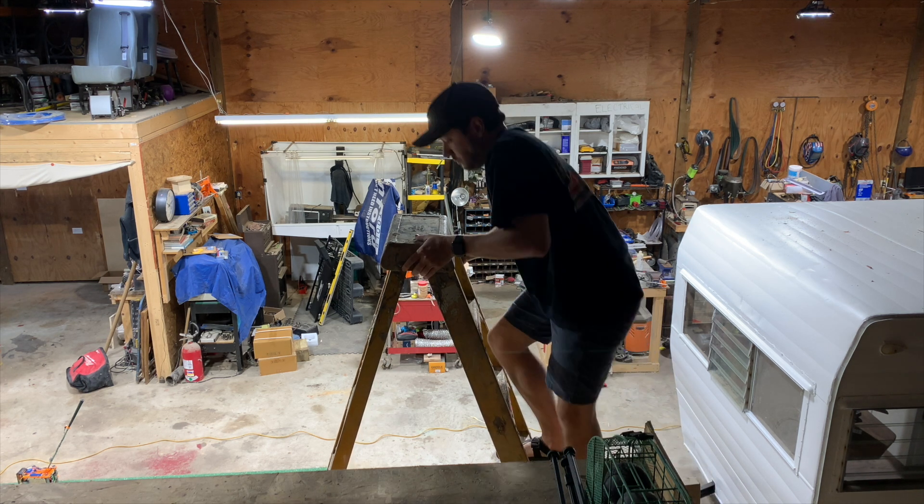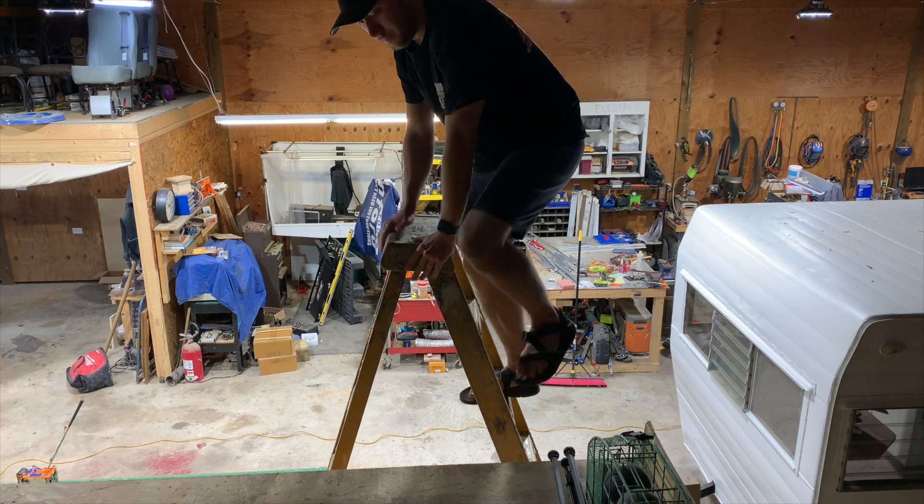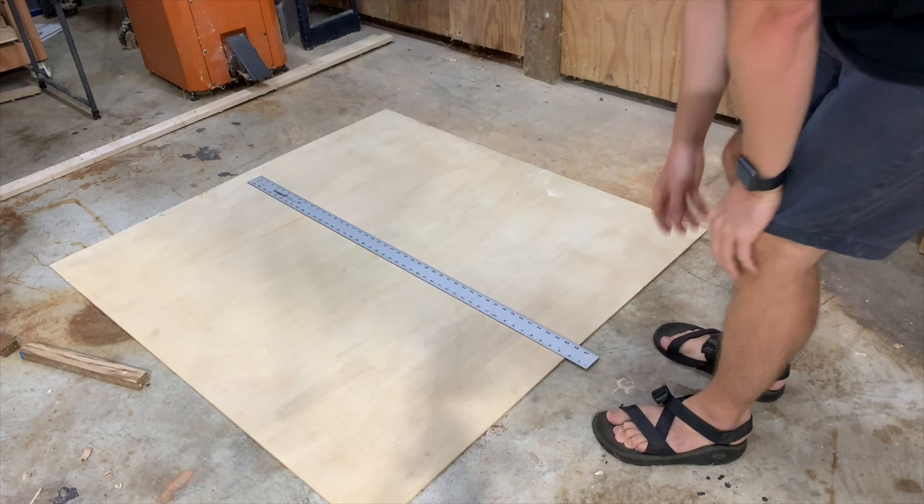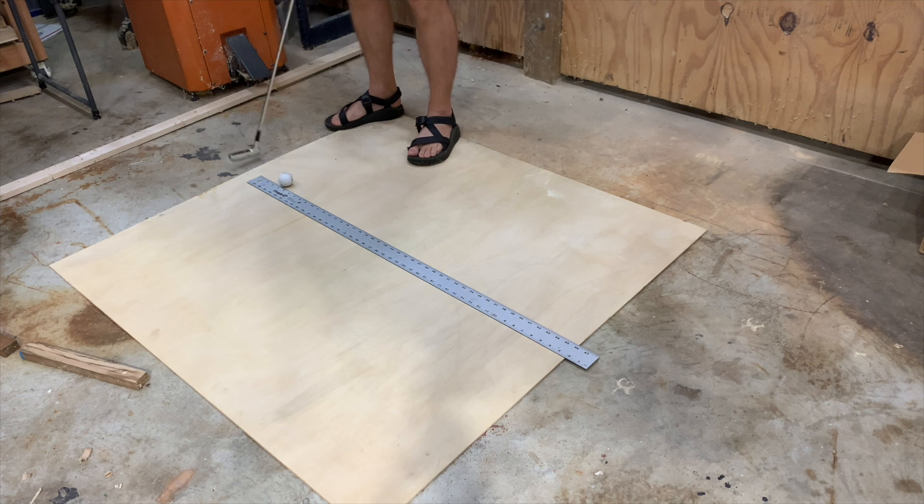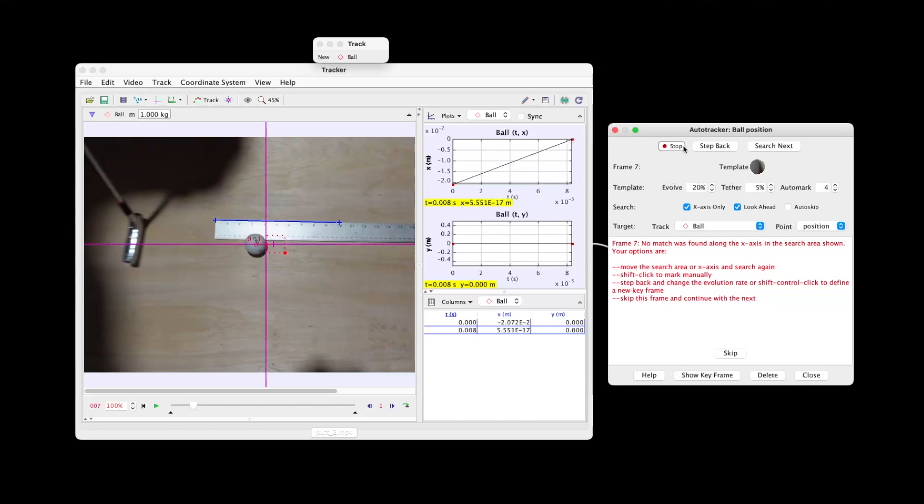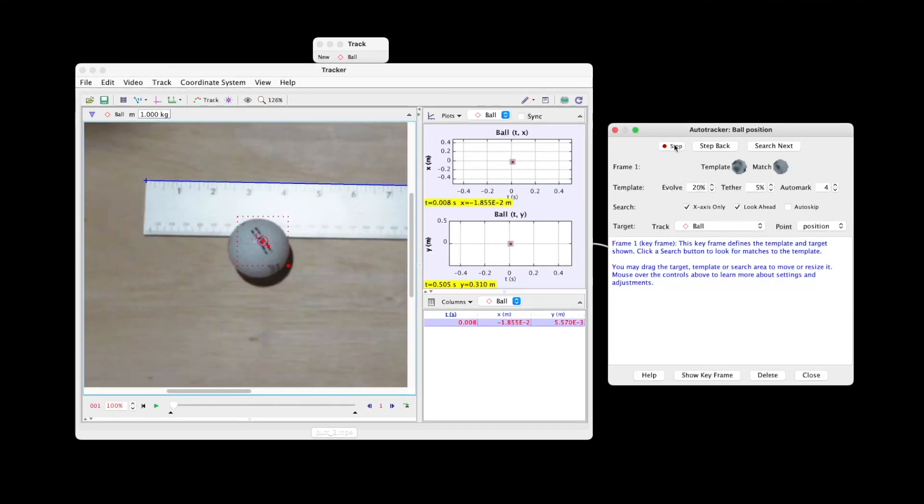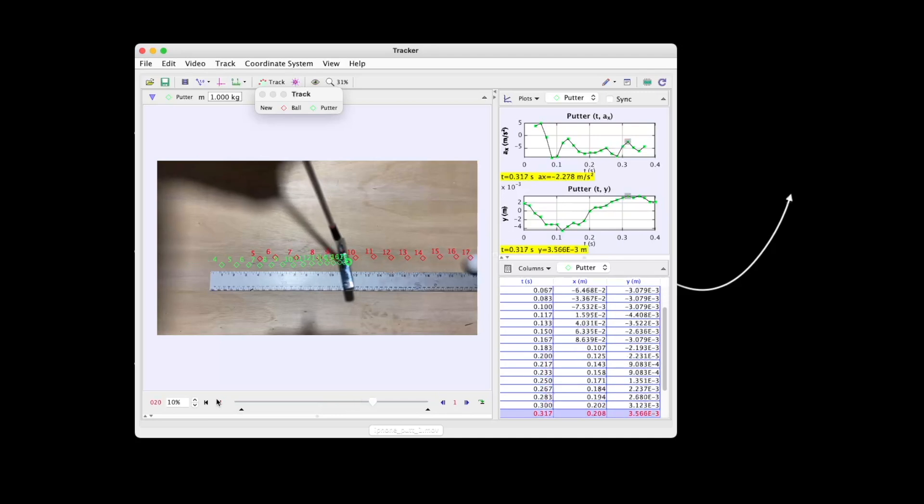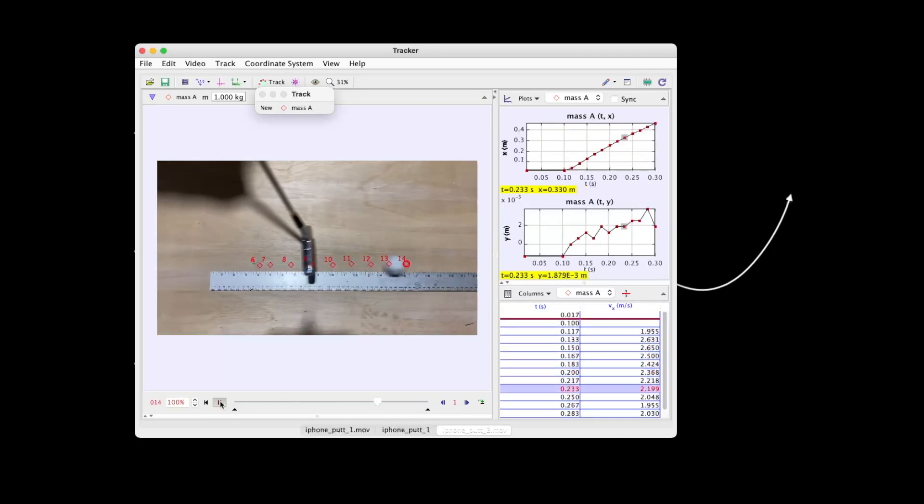The first thing we need to know is how hard to hit the ball. So I went up in the attic and I grabbed an old putter, laid down a ruler, and started hitting some balls. By recording hitting those balls, we can analyze the footage and determine how fast the ball was actually going. This will give me a good starting point on how high to lift the putter to hit the ball 3 meters.